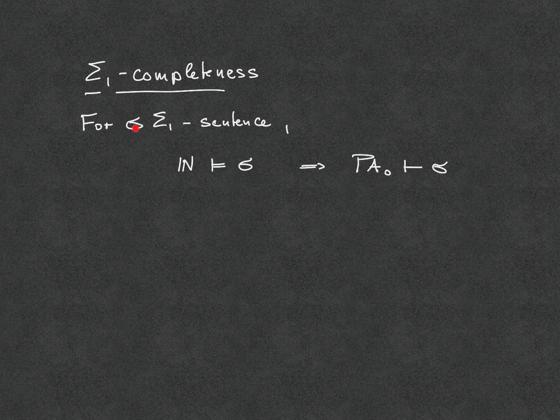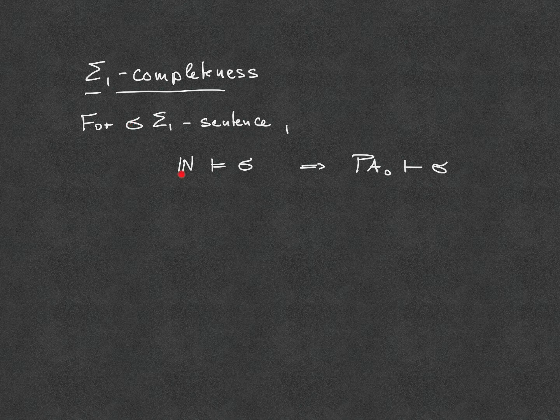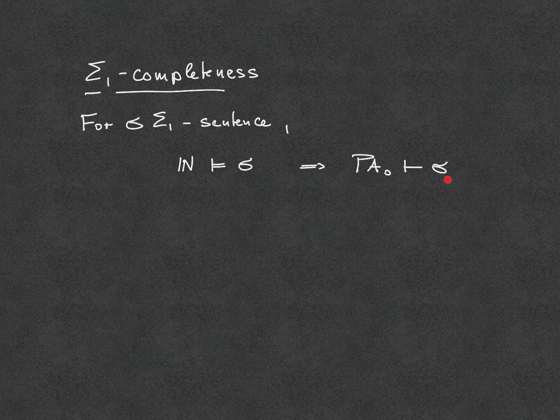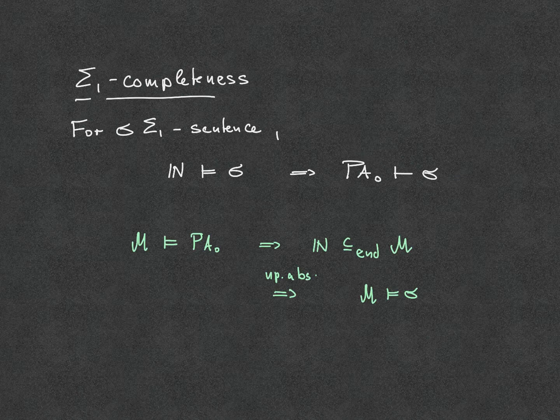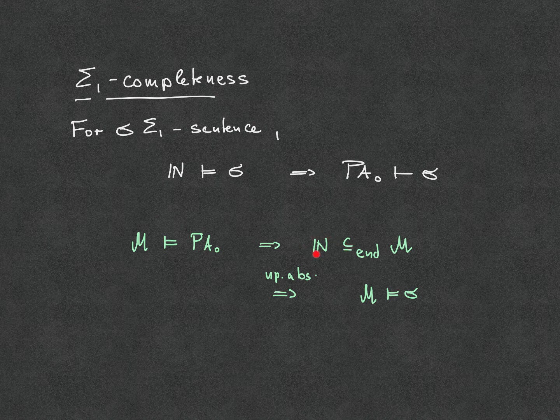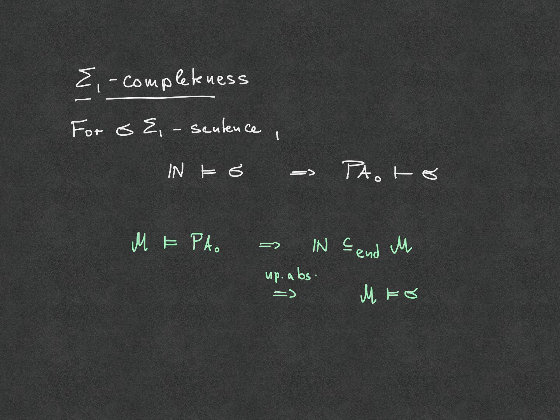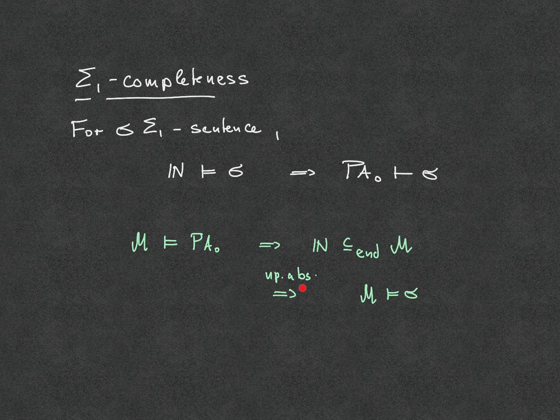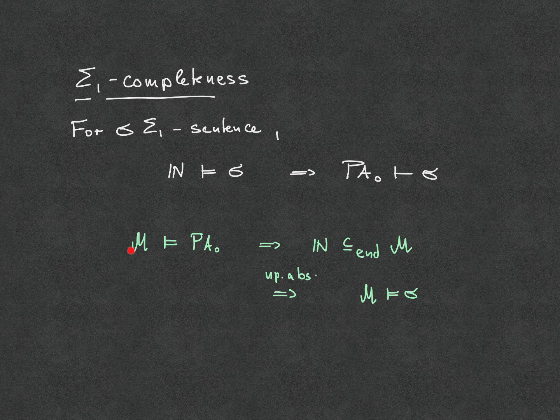An important consequence of this sigma-1 upward absoluteness is the so-called sigma-1 completeness of PA0, namely, if I have a sigma-1 sentence that is true in the standard model, then PA0 can actually prove it. And the reason for this is simply, if you recall, that if we had a model of PA0, then it contained an isomorphic copy of the standard model as an initial segment. And if we assume that sigma holds in N, then by upward absoluteness, because it's a sigma-1 sentence, it also has to hold in the model M then. And that means by the completeness theorem, PA0 has to prove sigma.